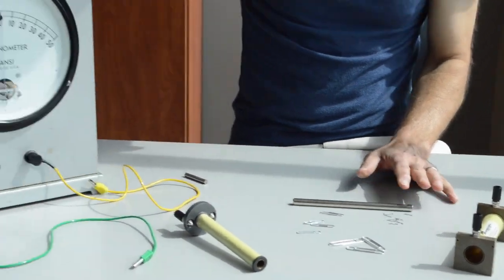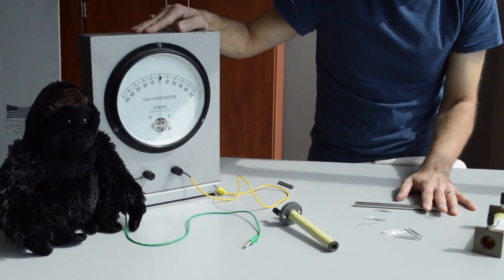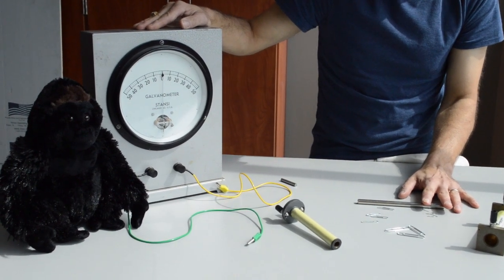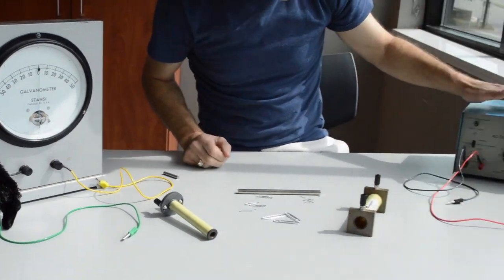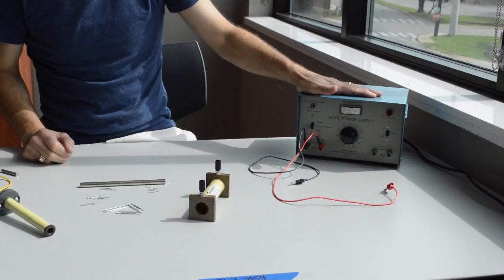Here I have a galvanometer. This is a kind of electric meter that is not actually calibrated in any units that we normally use. And this is a low voltage power supply.